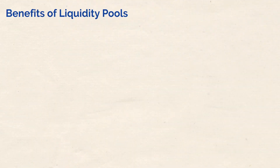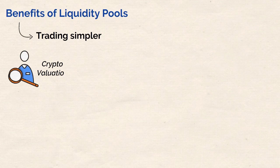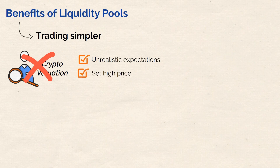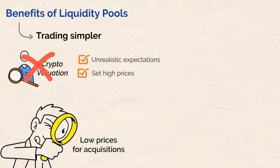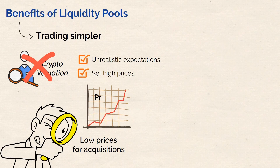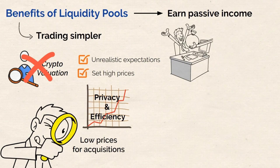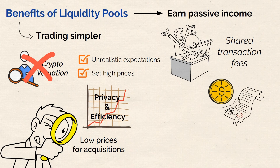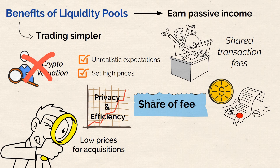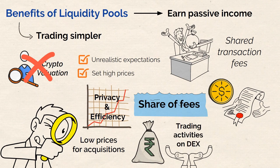Here are some advantages of liquidity pools in crypto. One benefit is they make trading simpler — they eliminate the need to find someone who shares your valuation of a particular cryptocurrency. Many traders have unrealistic expectations, setting high prices for sales while seeking low prices for acquisitions. The absence of a centralized exchange in liquidity pools can improve privacy and efficiency in trading. Another benefit is that they let you earn passive income as a liquidity provider. Liquidity pools allow providers to earn interest on their digital assets in the form of shared transaction fees. By depositing tokens into a smart contract, you can earn a share of fees generated by trading activities, which incentivizes users to supply liquidity to the pool.